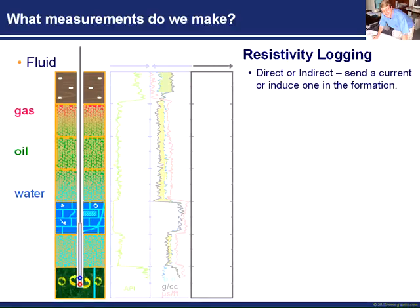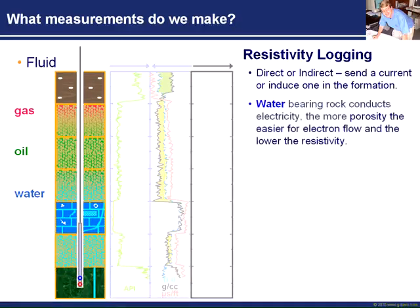So we've got a direct measurement in conductive muds, and an indirect measurement where we induce a current to flow in the formation and measure the tool's response to that. You may recall from school physics that water can conduct electricity if it has salts in it. Commonly, natural waters all tend to have salts in them to some degree. The higher the salinity - the more salt in it - the more electricity it can conduct, so the lower the resistivity.